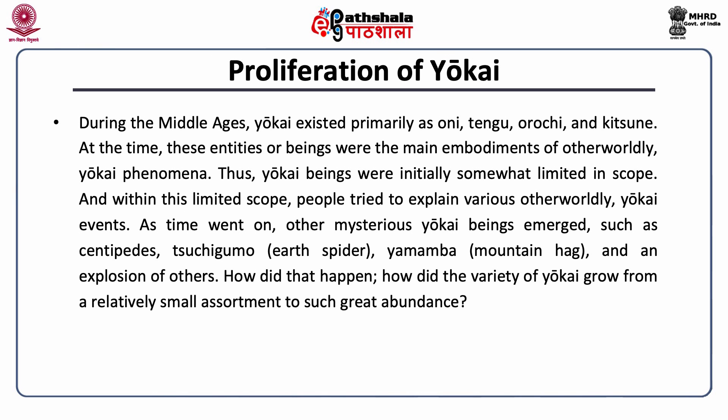Proliferation of Yokai: During the Middle Ages, Yokai existed primarily as Oni, Tengu, Orochi and Kitsune — the main embodiments of otherworldly Yokai phenomena. Yokai beings were initially somewhat limited in scope, and within this limited scope people tried to explain various otherworldly events. As time went on, other mysterious Yokai beings emerged such as centipedes, Tsuchigumo the earth spider, Yamauba the mountain hag, and an explosion of others. How did the variety of Yokai grow from a relatively small assortment to such great abundance?